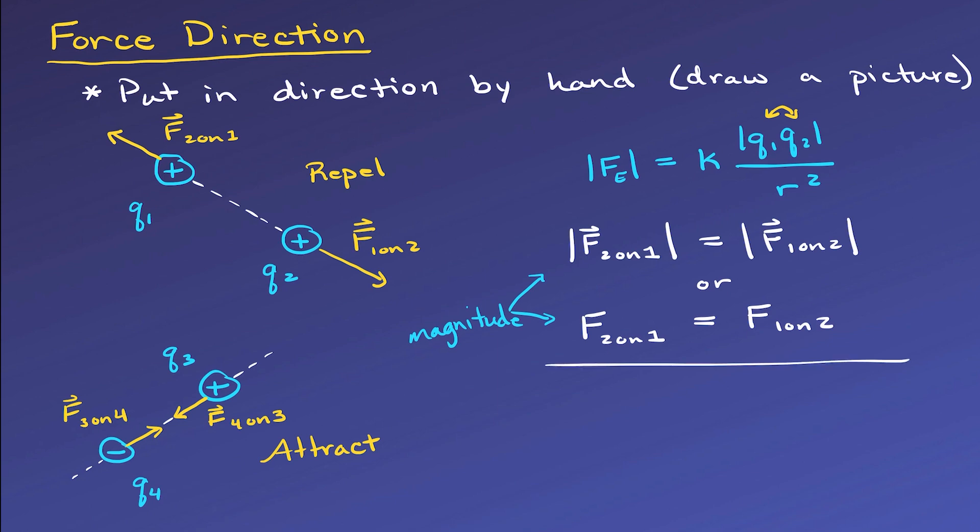If we leave the vector hats without using absolute value bars, we are explicitly including the direction nature of the vector. Therefore, we must include a minus sign in front of one of the forces to indicate that the forces are in opposite directions. Remember that when we have a minus sign in front of a vector quantity, it is only telling us something about the direction of that vector, nothing else.